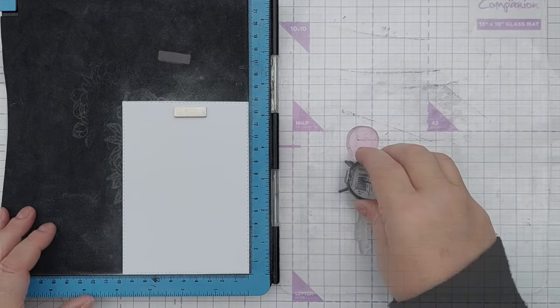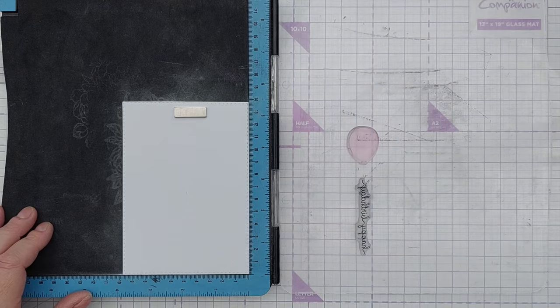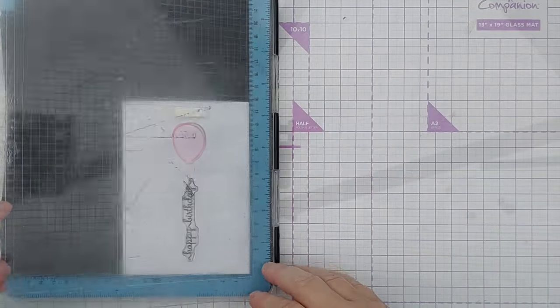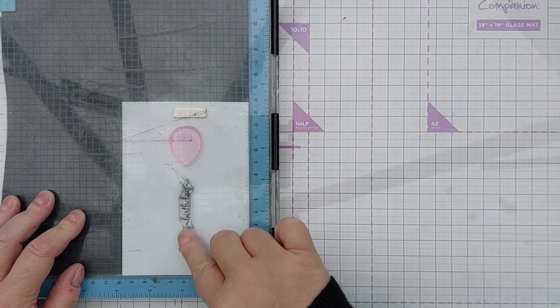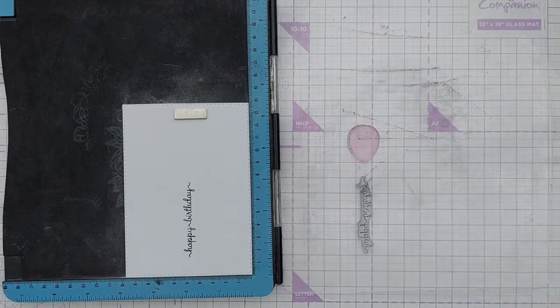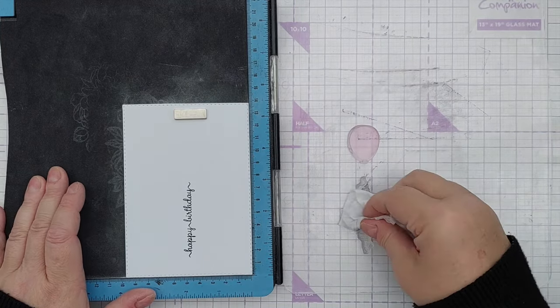I dusted my panel with talcum powder to remove any static, grease or moisture because I wanted to do some heat embossing, and then I stamped the happy birthday. I'm using Tuxedo Memento black ink because it's a nice black ink and it's easy to wipe off photopolymer stamps.